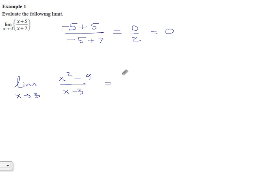We get x squared minus 9 over x minus 3 equals 9 minus 9 over 3 minus 3 equals 0 over 0 equals undefined. Not good.